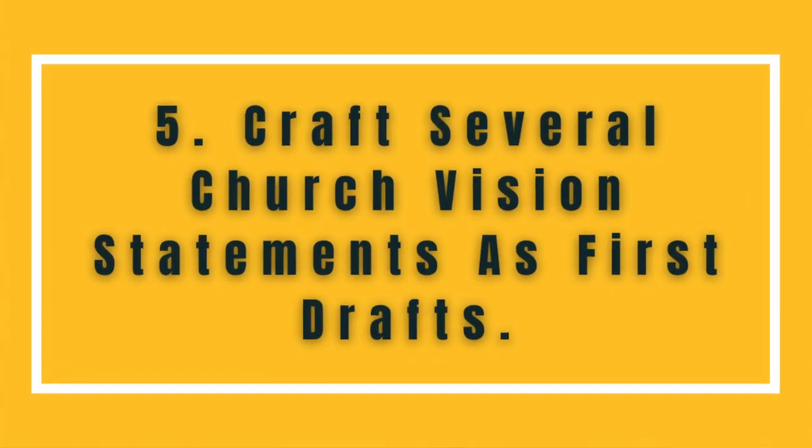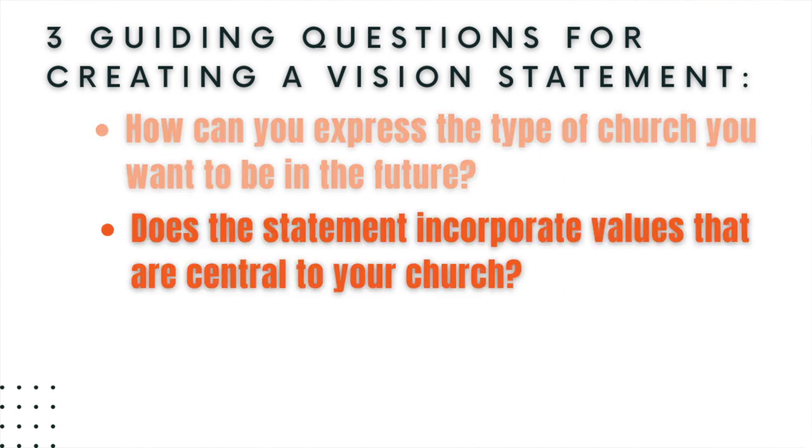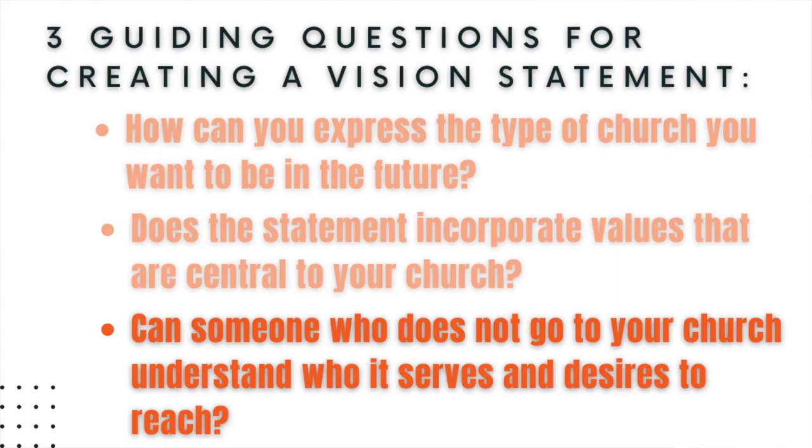Step five is to craft several vision statements as first drafts. Brainstorm keywords associated with your church, and jot down words associated with its characteristics. Then use these guidelines to begin crafting initial rough drafts. Formulate sentences that answer the following questions: How can you express the type of church you want to be in the future? How can you convey and include the core values that are central to your church? And can someone who does not attend your church understand who it serves and desires to reach? The idea is to get several statements to choose from, then revise and refine them together as a team.